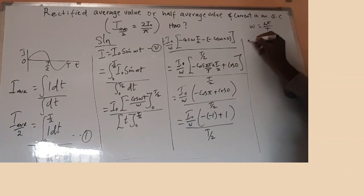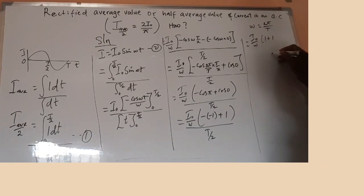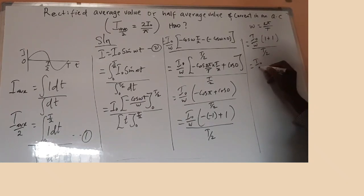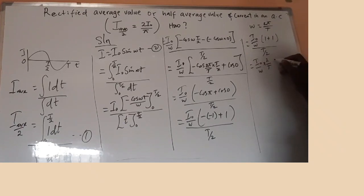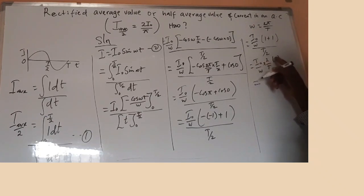So from there we continue. This is equal to I₀ over ω. Minus times minus gives us plus, so we have plus one plus one, close bracket, all over T over two. When you rearrange this, it gives us I₀ over ω times 2 over T. Then one plus one is two, into bracket two. If you clear all the brackets it will be I₀ times two times two, giving us four I₀ all over ωT.